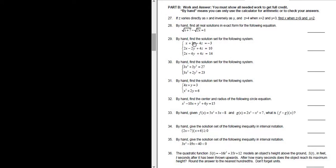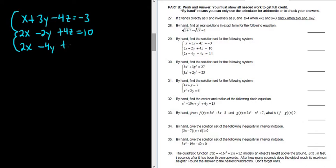Problem number 29. By hand, find the solution set for the following system. So we have a system of equations: x plus 3y minus 4z equals negative 3, 2x minus 2y plus 4z equals 10, and 2x minus 4y plus 4z equals 14.